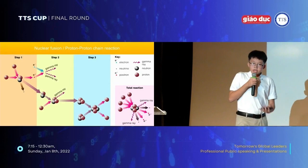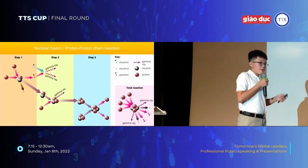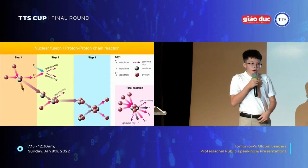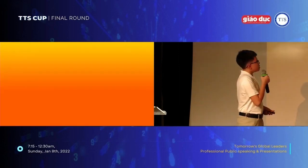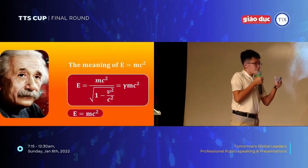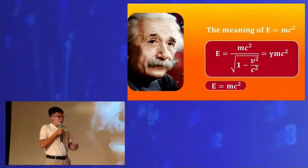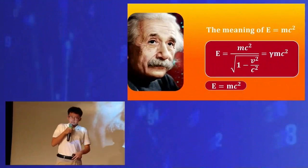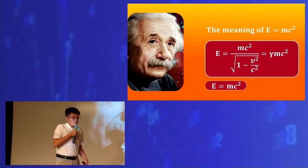As we see, in every step there is mass loss. Now I will use Einstein's equation E equals mc squared to calculate the energy from the mass loss. The main point of special relativity is that the speed of light is constant, which means that energy and mass are convertible.